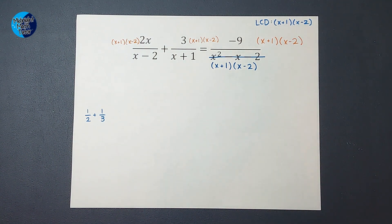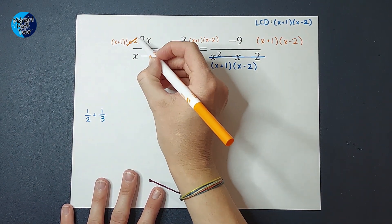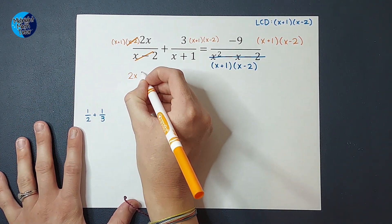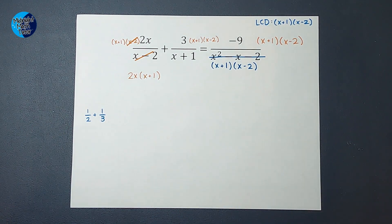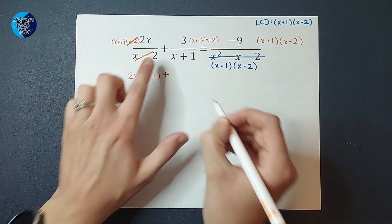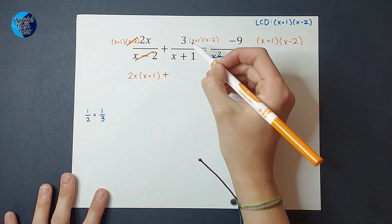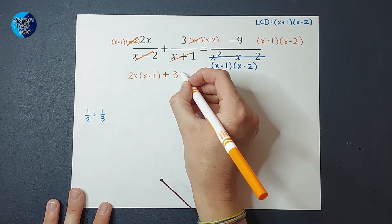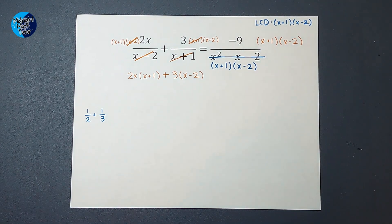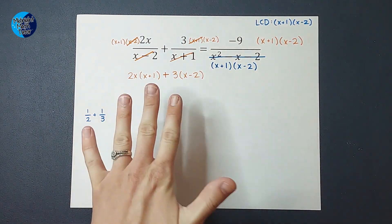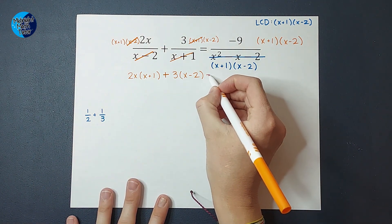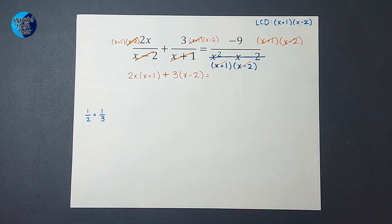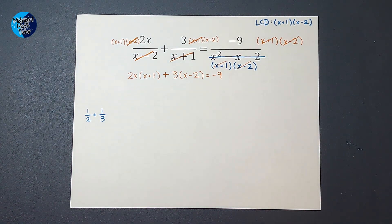All right. But now let's watch what happens. This is the fun part. So when I multiply these, guess what? This guy and this guy cancel. So then I'm just left with 2x times x plus 1 there. Plus, what happens when I multiply here is the x plus 1s cancel, so I'm just left with 3 times x minus 2. That looks a lot less scary, right? Let's see what happens here. Guess what? x plus 1 cancels and x minus 2 cancels. So I'm just left with negative 9 over here. That is a lot better, right? I can do this.